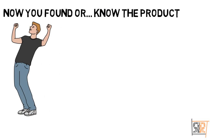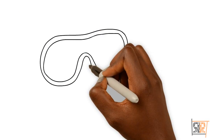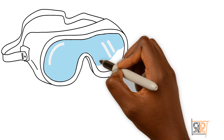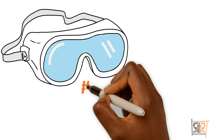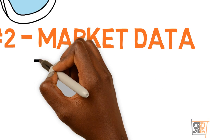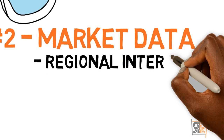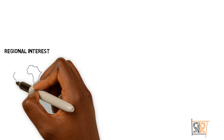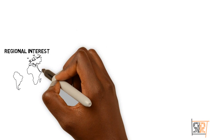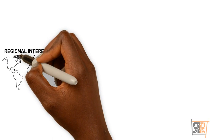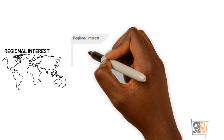Now that you've found your product and you're excited, before you get too detailed, let's look at some market data, which will help you understand how to market your product and provide more validation. When it comes to market data, there are two key items: regional interest and related searches. Regional interest can cover the whole continent — South America, China, the United States, Africa, Australia, everywhere.